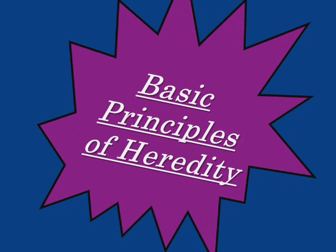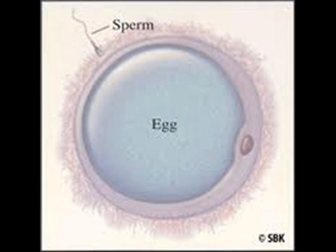The Basic Principles of Genetics. Traits get passed down from parent to offspring by the sperm or the egg. The sperm is the male gamete, and the egg is the female gamete. The sperm goes and fertilizes the egg, basically passing down the traits.